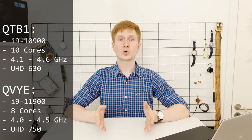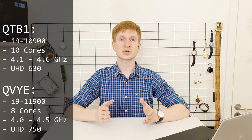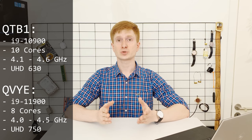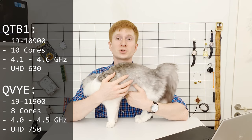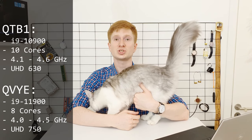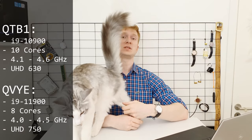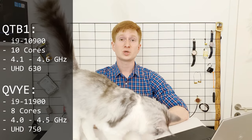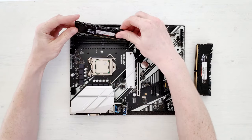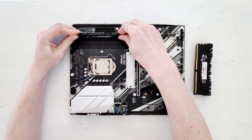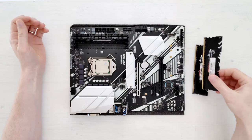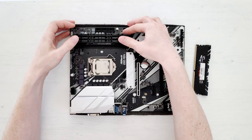As mentioned, 11th gen Core i9 CPUs support PCI Express 4.0, and this engineering sample QVYE also supports it. 11th gen CPUs also have upgraded integrated graphics — in this case we get Intel UHD 750 instead of Intel UHD 630. I'll talk about the iGPU performance by the end of the video, and all technical details and test results will be available in the slides shown at the end of the video.